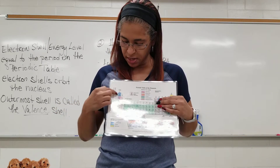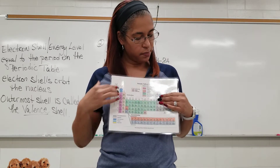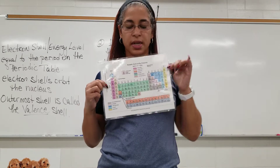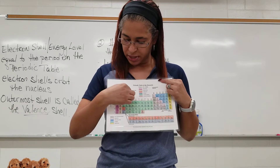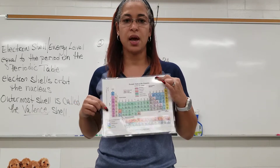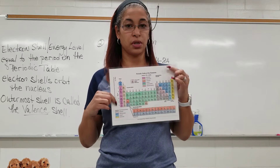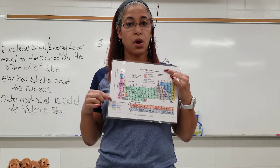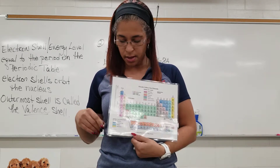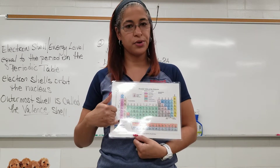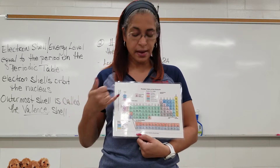In period one, hydrogen and helium only have one electron shell. If you look at period two, lithium to neon are in the second period and they have two electron shells. The periodic table is organized so well that whatever period you're in is equivalent to the number of shells you have.